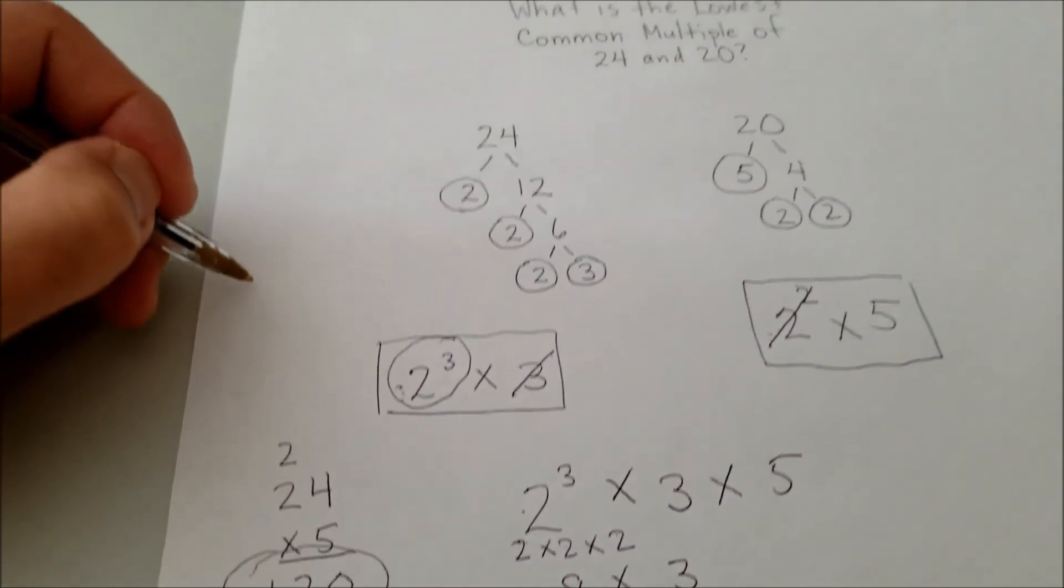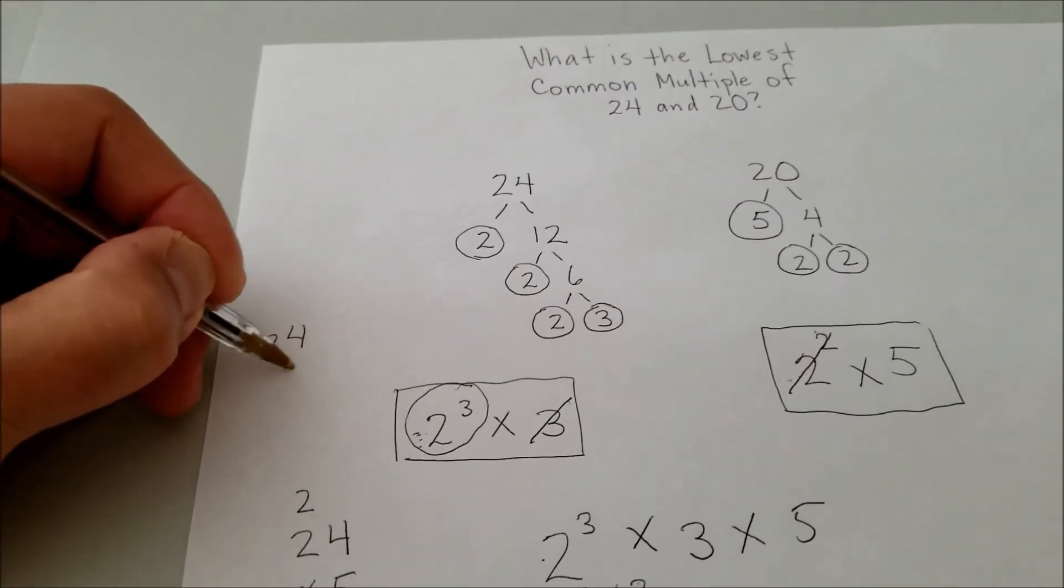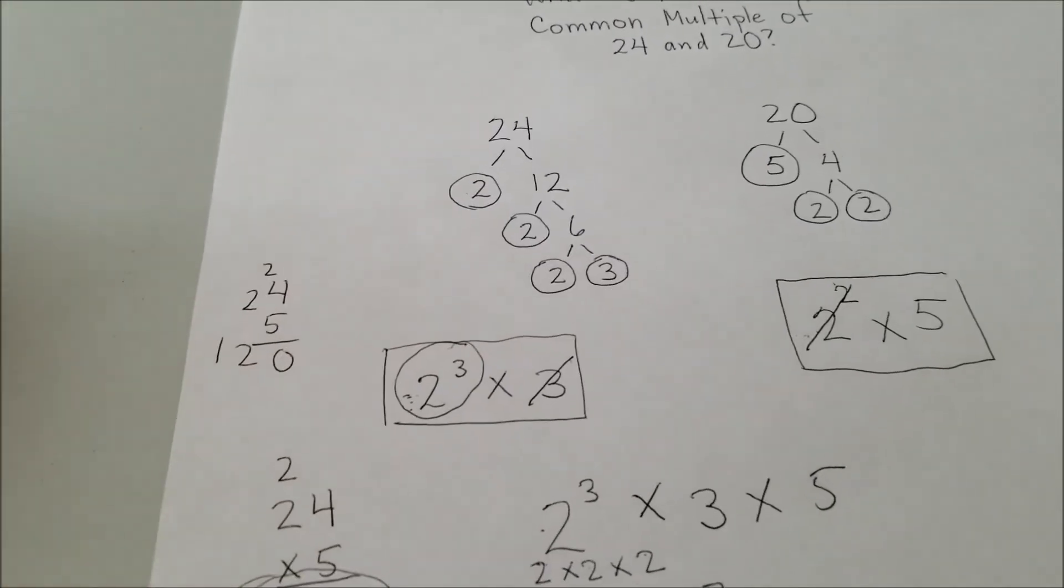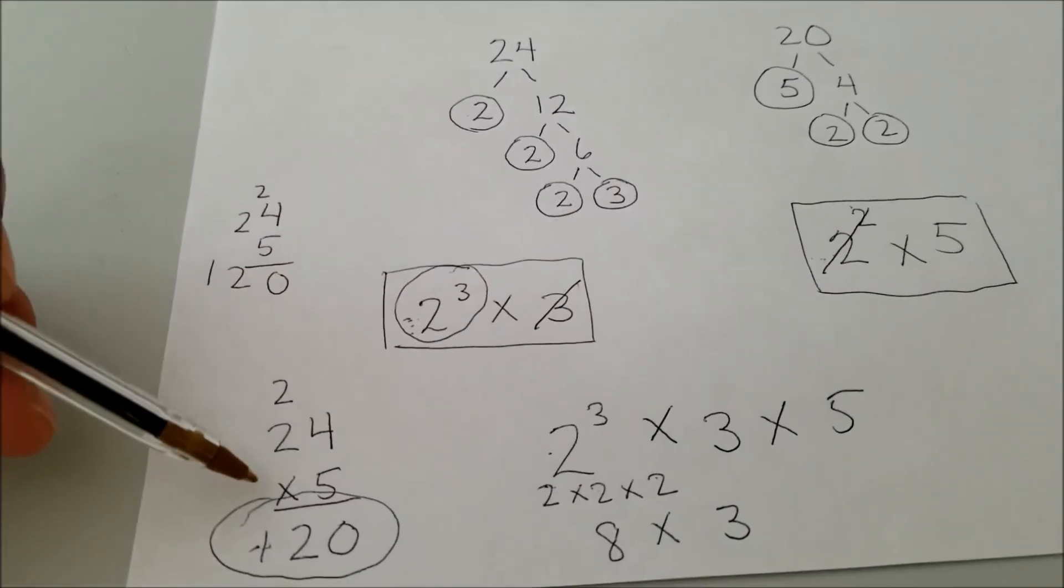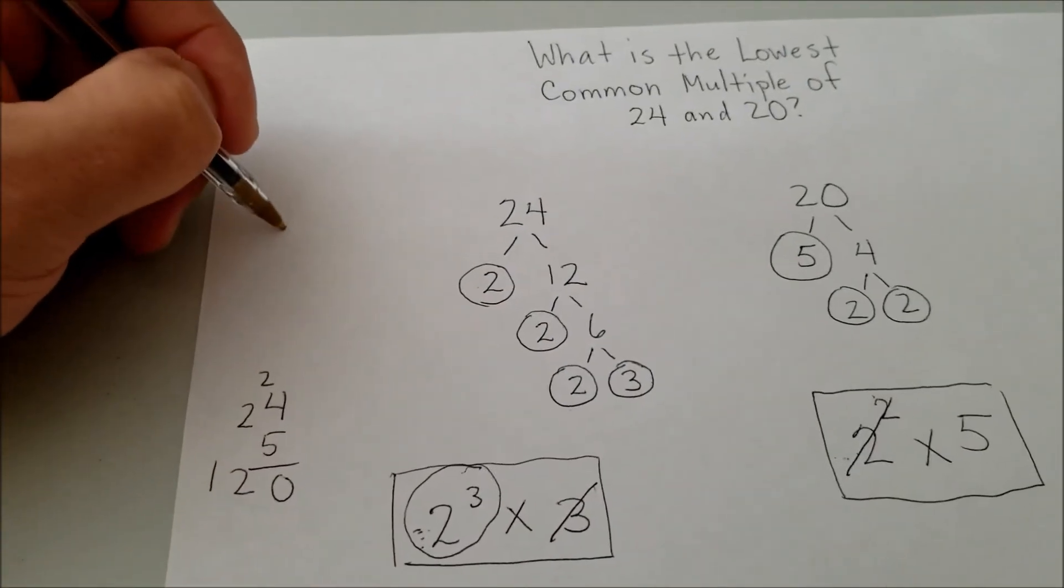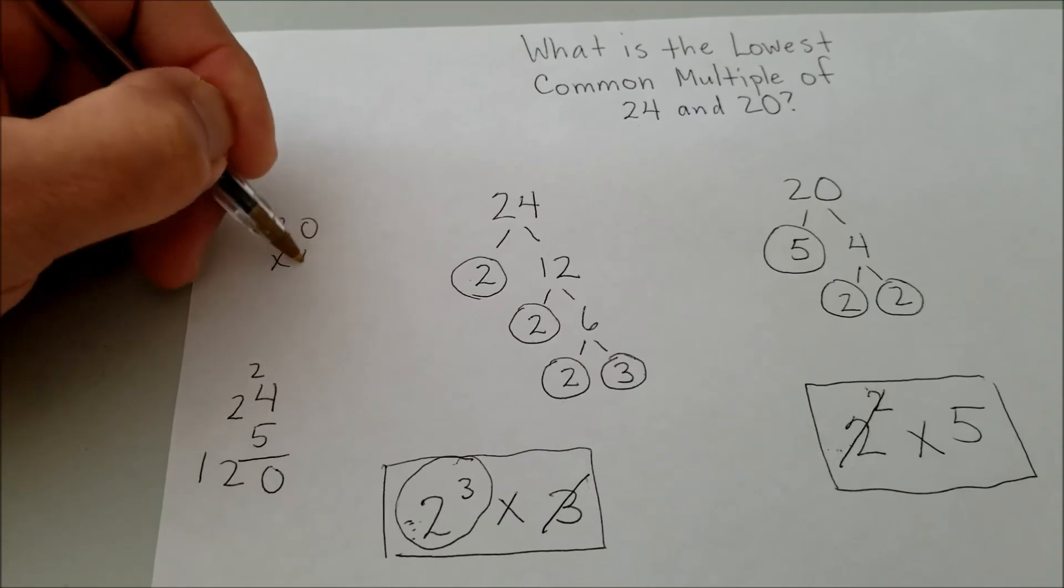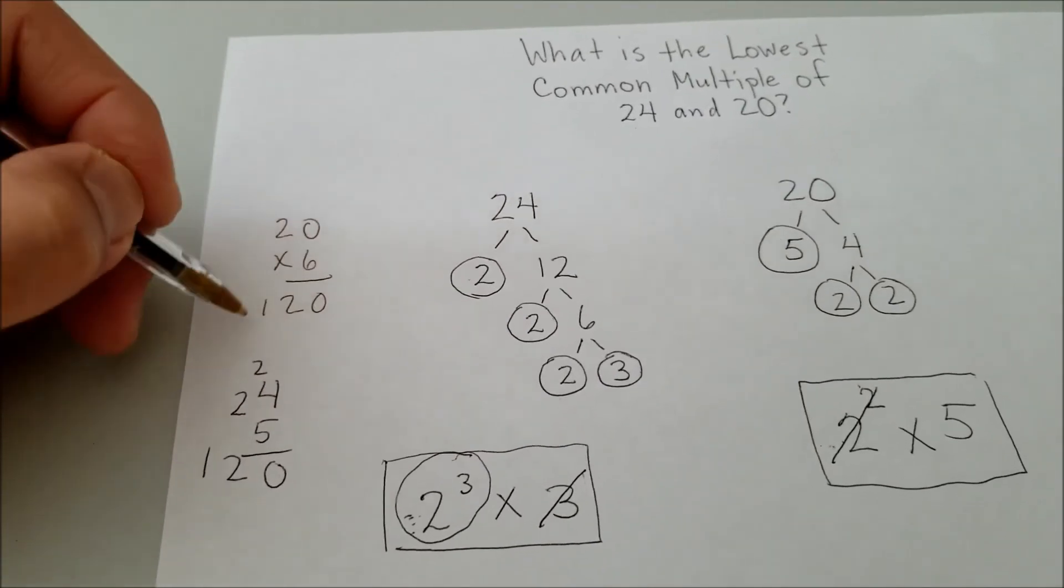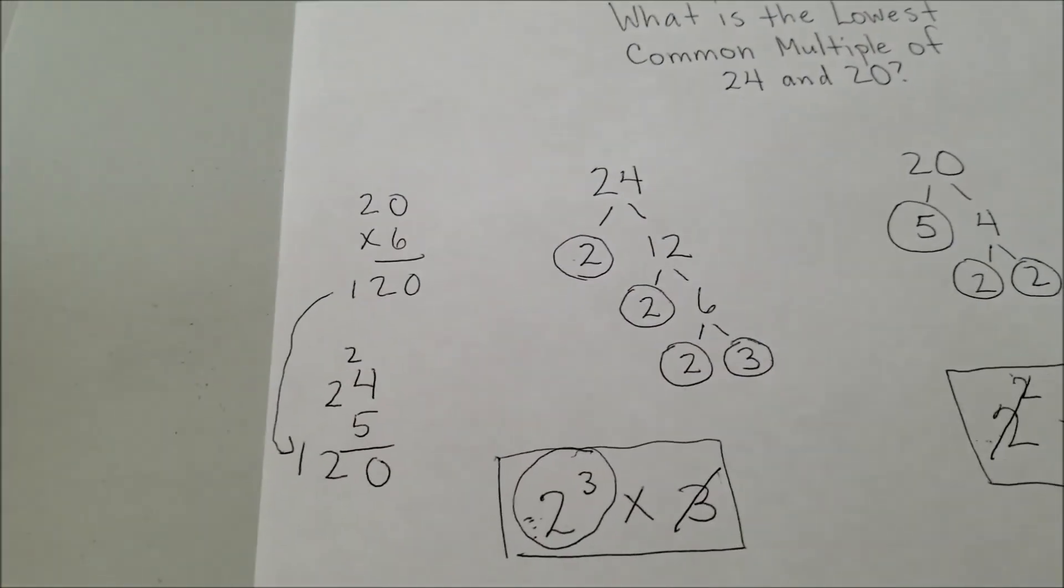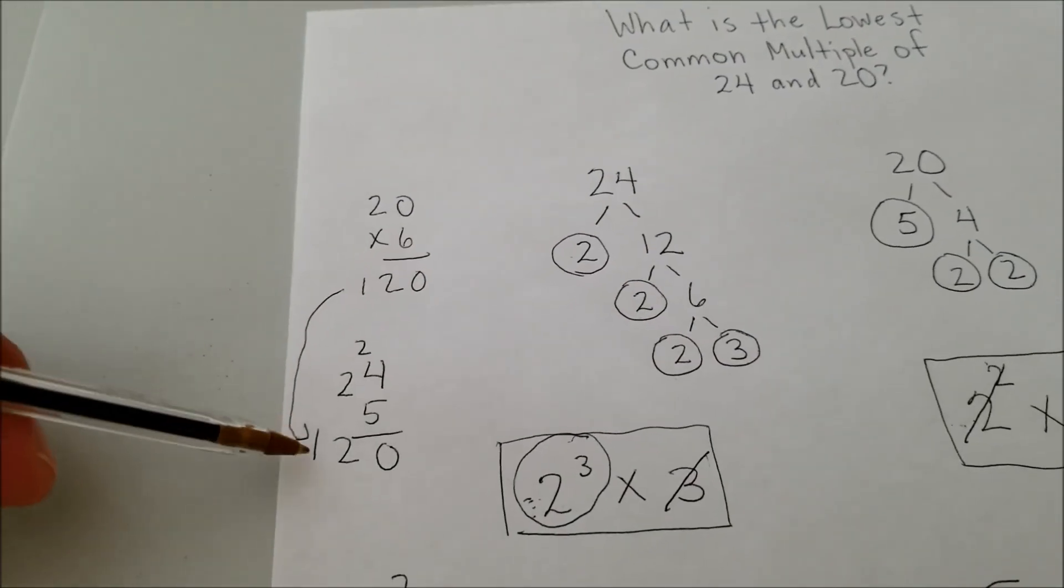So if you just want me to, before we quit today, want me to check this, I'll check it. So 24 times 5 is 120. So that's just to prove that we can get 120. And then I think you guys know that 6 times 20 will also give us 120. So that's just to prove that 120 is the lowest common multiple.